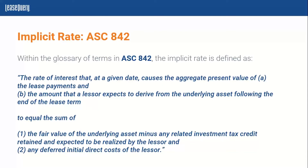Starting off with ASC 842, within the glossary of terms, the implicit rate is defined as the rate of interest that causes the present value of your lease payments and any amount the lessor expects to derive from the underlying asset at the end of the lease term — so like an expected residual value — to equal the sum of the fair value of the asset minus any investment tax credit, and any deferred initial direct costs.